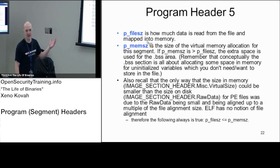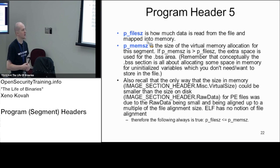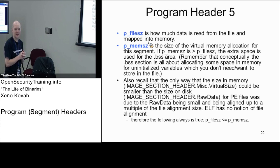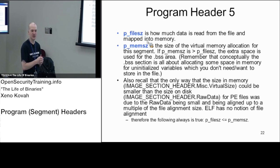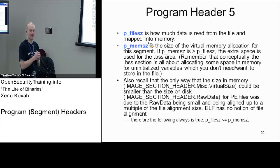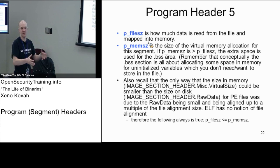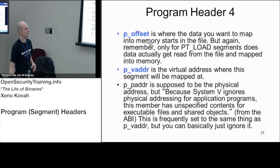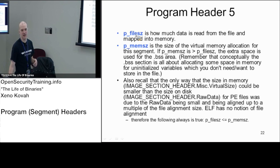p_filesz: we've got where the file data starts and how big it is. The equivalent in PE section headers is size of raw data — that field says how big this section is on disk that we want to map into memory. Same thing in ELF program headers: p_offset is like pointer to raw data, and p_filesz is like size of raw data.